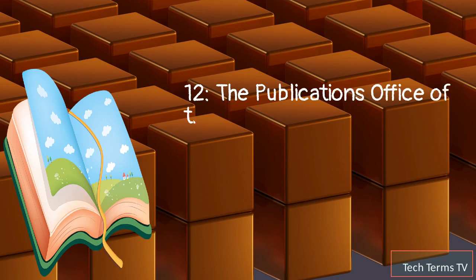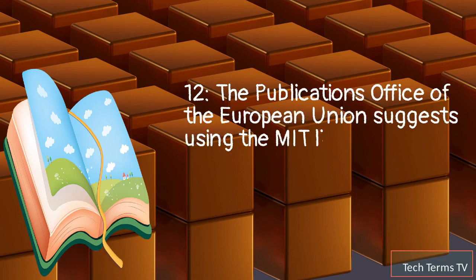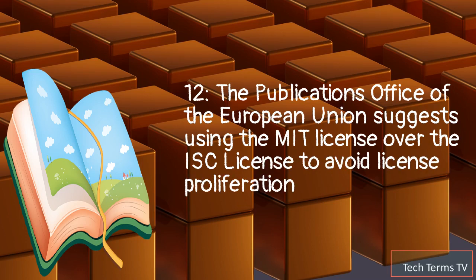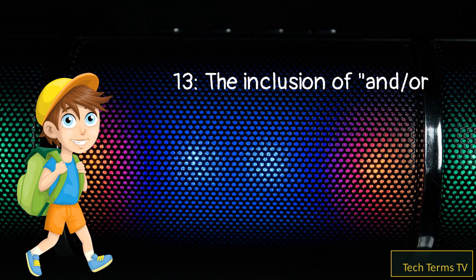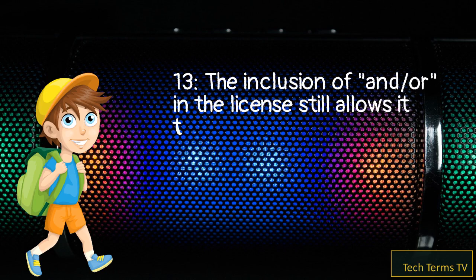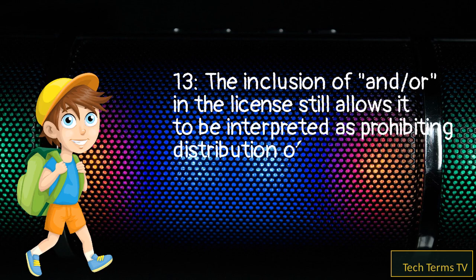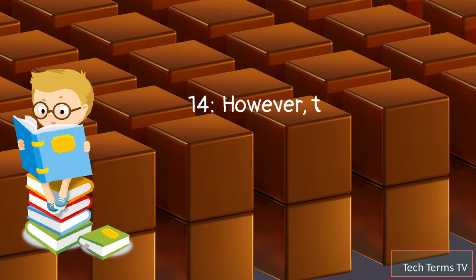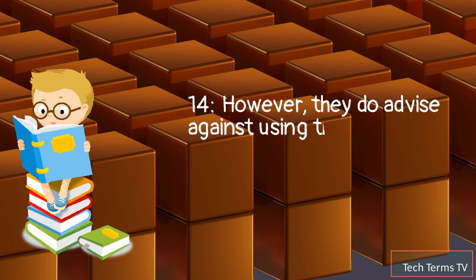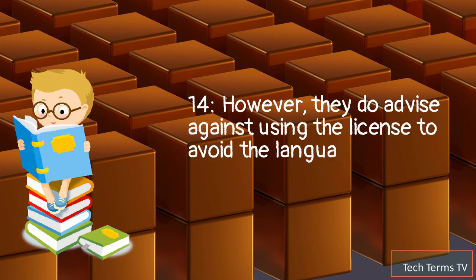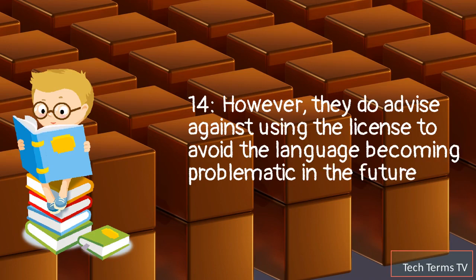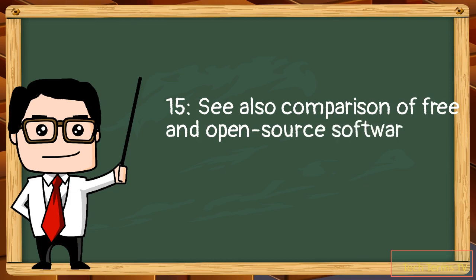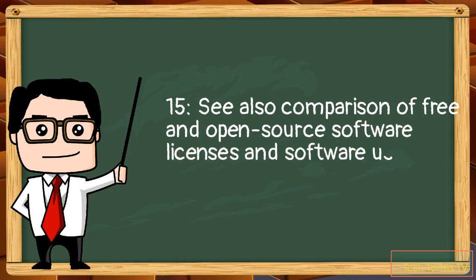The Publications Office of the European Union suggests using the MIT license over the ISC license to avoid license proliferation. The inclusion of "and/or" in the license still allows it to be interpreted as prohibiting distribution of modified versions, according to the GNU project. However, they do advise against using the license to avoid the language becoming problematic in the future. See also: comparison of free and open-source software licenses and software using the ISC license.